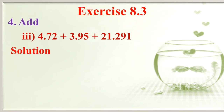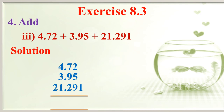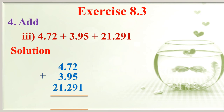Next: add 4.72 plus 3.95 plus 21.291. Write decimal numbers in vertical position: 4.72, 3.95 and 21.291. Are they like decimals? No. So make them like decimals by adding zeros: 4.720, 3.950, 21.291. Now add these three decimals. What is the answer? That is 29.961.